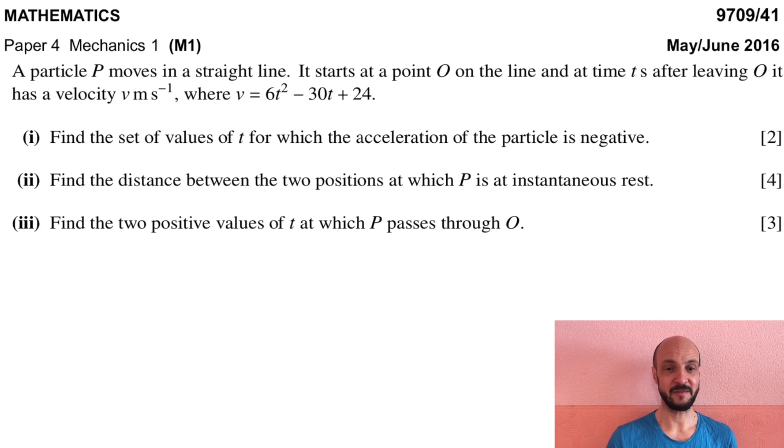Part 1: Find the set of values of t for which the acceleration of the particle is negative. Part 2: Find the distance between the two positions at which P is at instantaneous rest. And Part 3: Find the two positive values of t at which P passes through O.